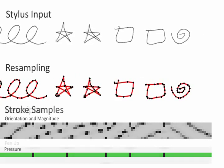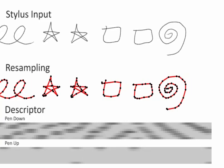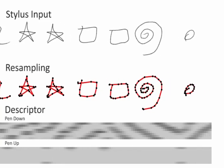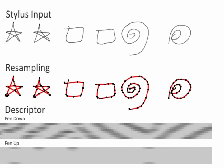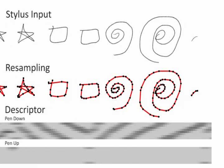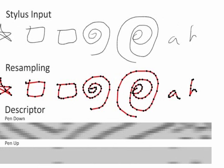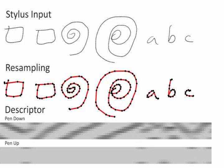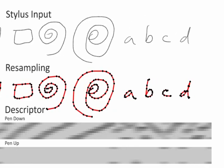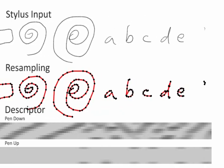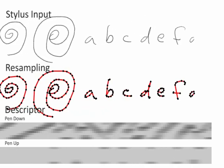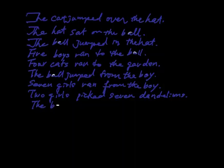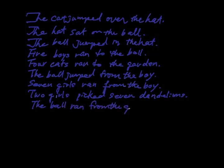We compute distances between tokens using a descriptor that blurs the samples temporally. Corresponding tokens are found by matching descriptor windows. Notice how similar word fragments have high correlation.